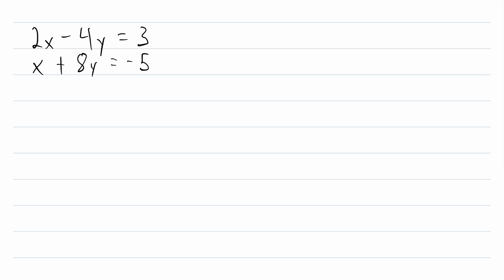There are three main components to representing a system of linear equations using matrices. The first is the coefficient matrix. The coefficient matrix, as the name implies, stores the coefficients of the system.